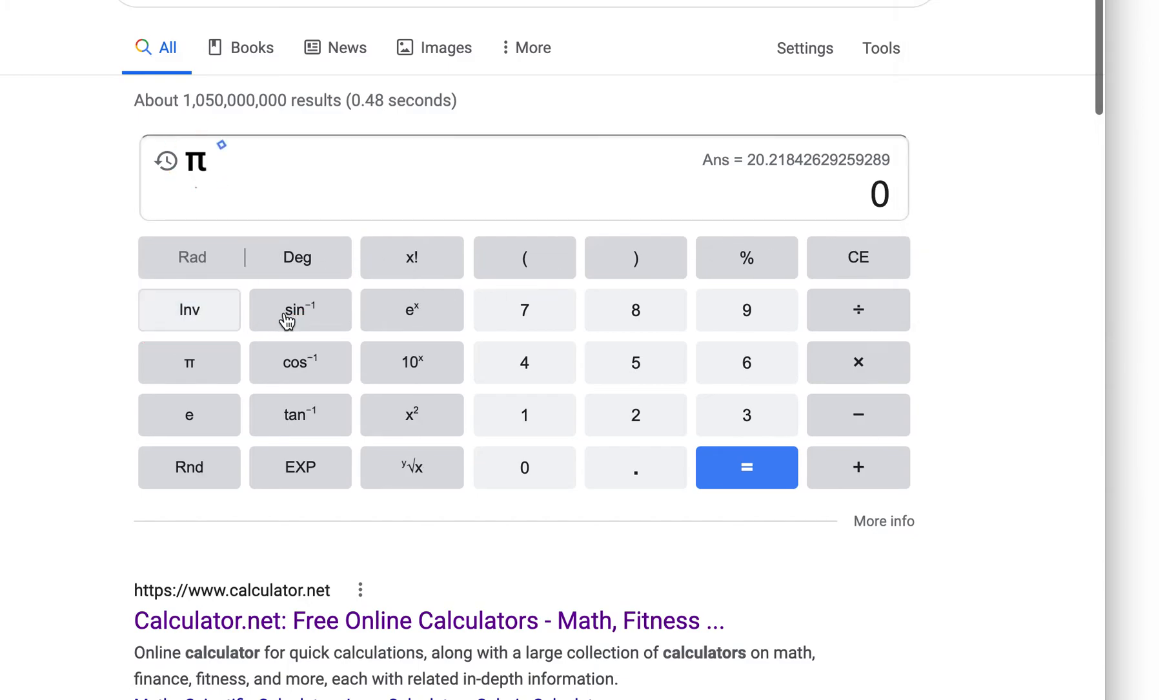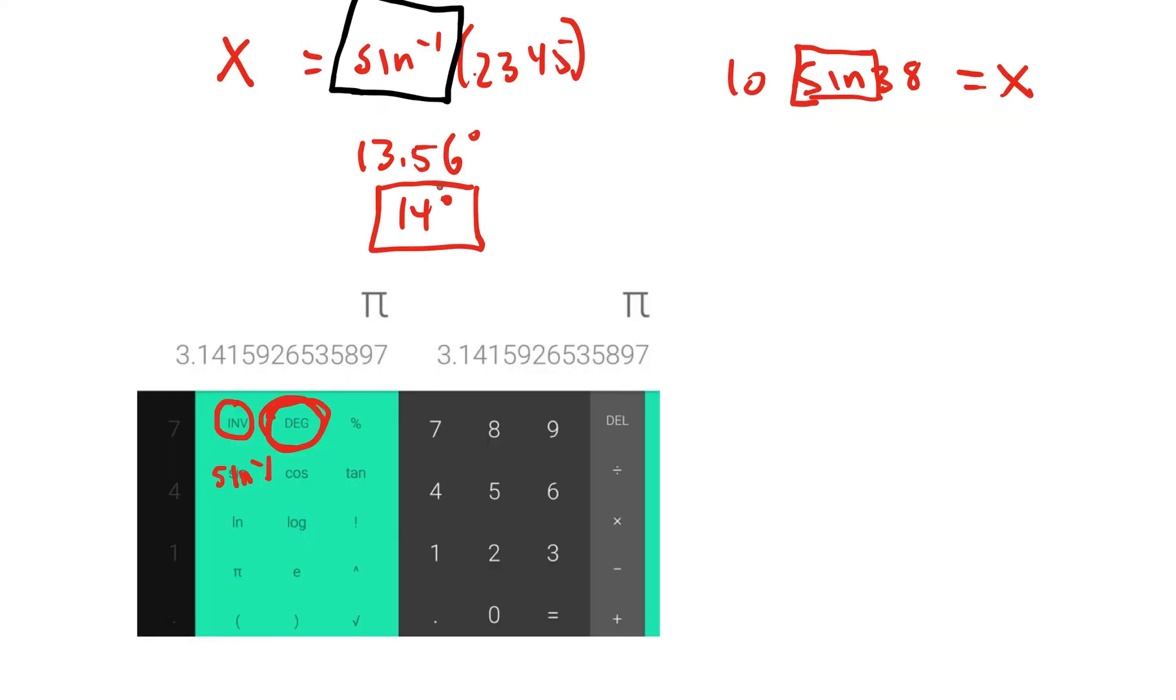So let's try it. I'm going to push inverse of sine, and I believe it was 0.2345. So this comes up saying arc sine. It's the same as sine to the negative 1. And we get 13.56 degrees. So we still get the same amount.